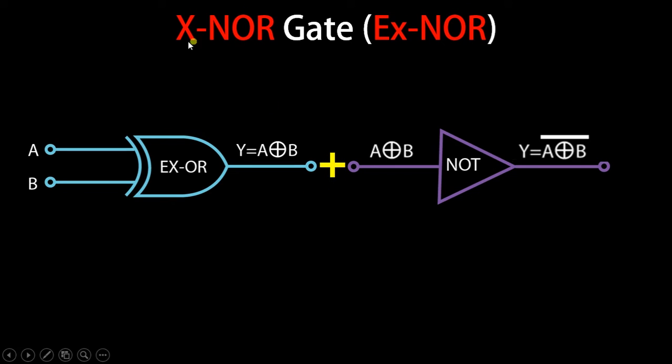Coming back to XNOR gate, you can see it's a combination of XOR and NOT gate. Here we have A and B as two inputs to XOR gate, then the output Y equals A XOR B. This output is fed to a NOT gate as input. So A XOR B is passed as input to a NOT gate, which takes only one input, complements that input, and gives an output.